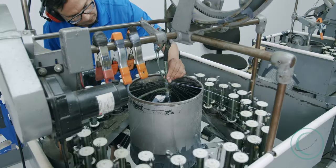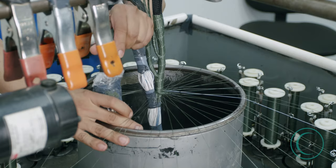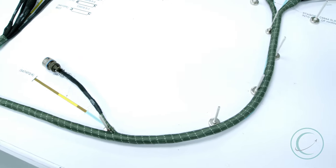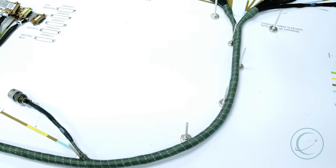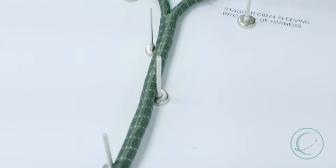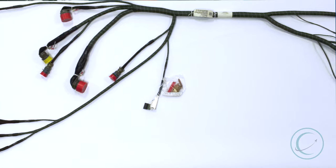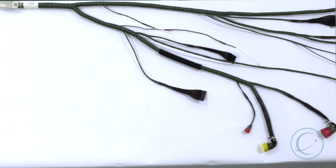We here at Interconnect Wiring have the capability to perform multiple types of machine braid. Whether it be green Nomex braid on an F-16 fighter jet harness or peak nylon braid on a Rolls-Royce helicopter engine harness, we got your harnesses covered. Here is a completed example once a wiring harness is finished with braid.